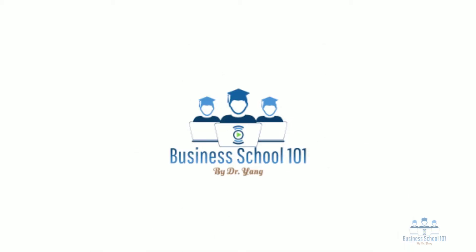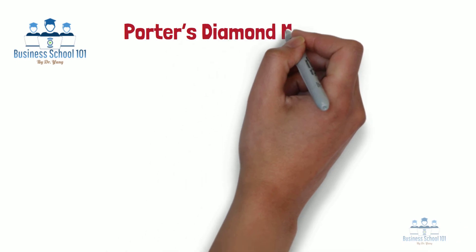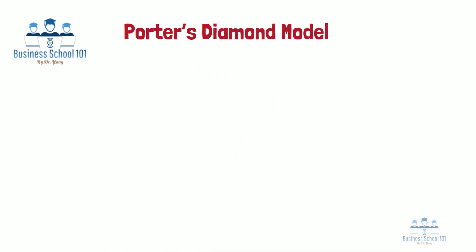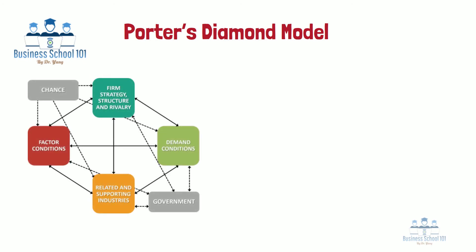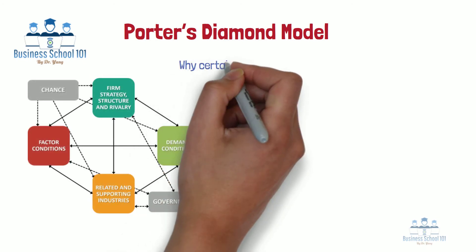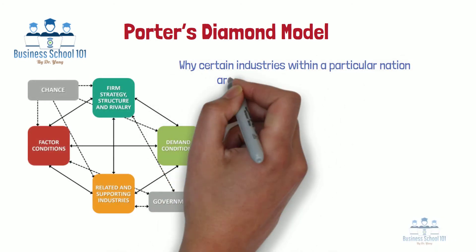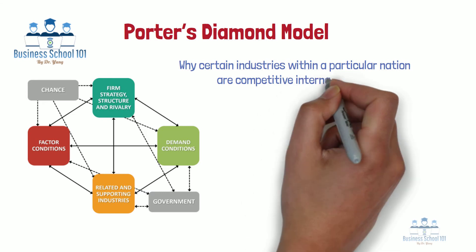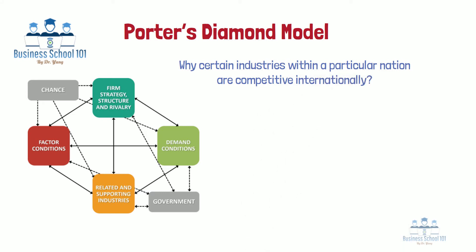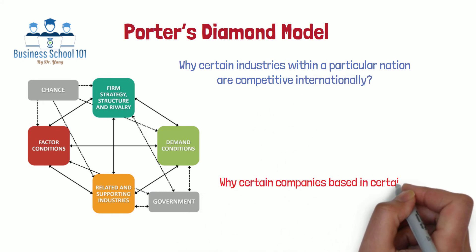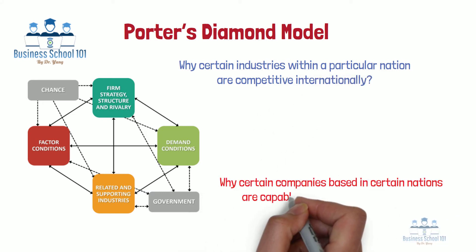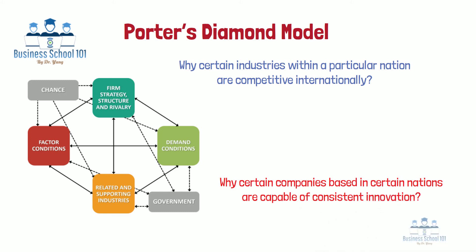Hello, everyone. Welcome to Business School 101. Porter's Diamond Model, also known as the Theory of National Competitive Advantage of Industries, is a diamond-shaped framework that focuses on explaining why certain industries within a particular nation are competitive internationally, and why certain companies based in certain nations are capable of consistent innovation.